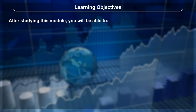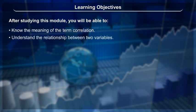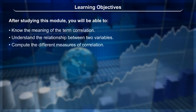Learning Objectives: After studying this module, you will be able to know the meaning of the term correlation, understand the relationship between variables, compute the different measures of correlation, and evaluate the degree and direction of the relationships.